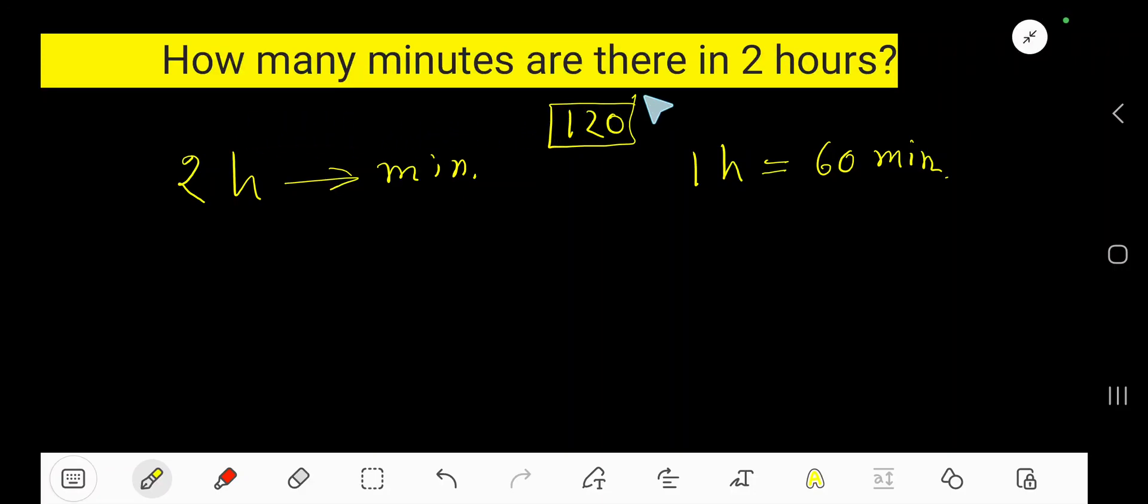How many minutes are there in 2 hours? In 2 hours you will get 120 minutes. If you convert these 2 hours into minutes, then you will get 120 minutes. To convert 2 hours, write hour like this.